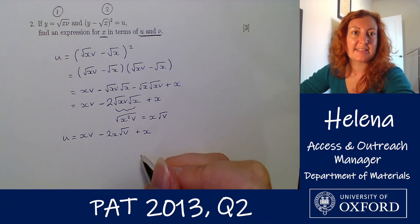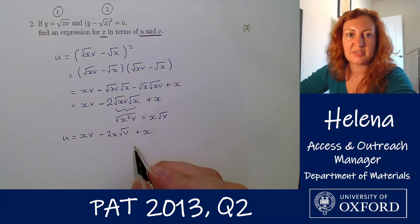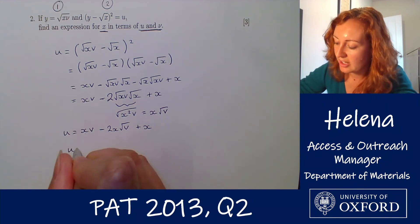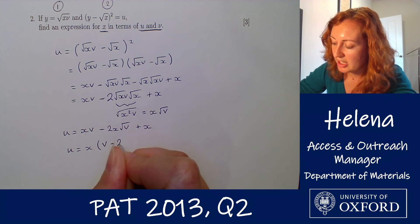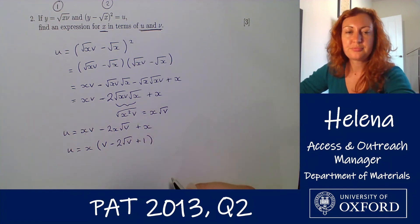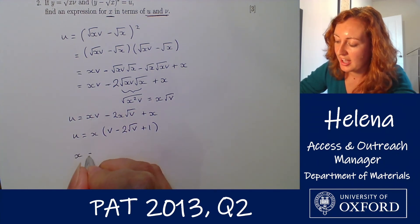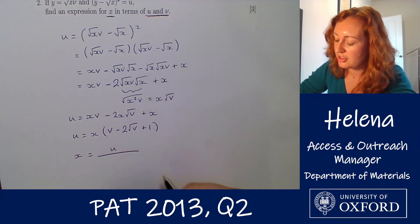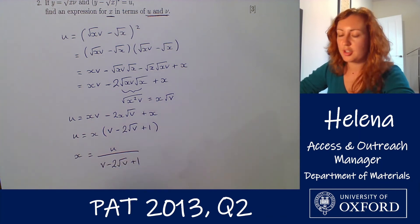Okay, now we're being asked to find an expression for x. So let's factorize an x out of this right hand side. So we have u equals x into a bracket containing v minus two root v plus one. And then if we divide through by this bracket here, we have an expression for x, which is u divided by v minus two root v plus one.